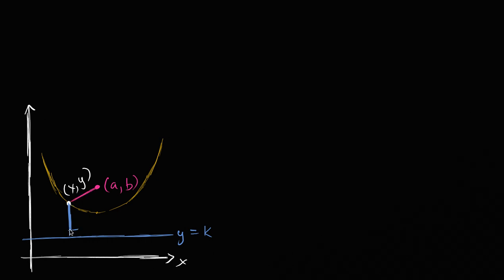When we take the distance to the directrix, we literally just drop a perpendicular — that's going to be the shortest distance to that line. The distance to the focus, on the other hand, is at a bit of an angle, so we'll need to use the distance formula, which is really just the Pythagorean theorem. The blue distance is just going to be our change in y — it's going to be y minus k.